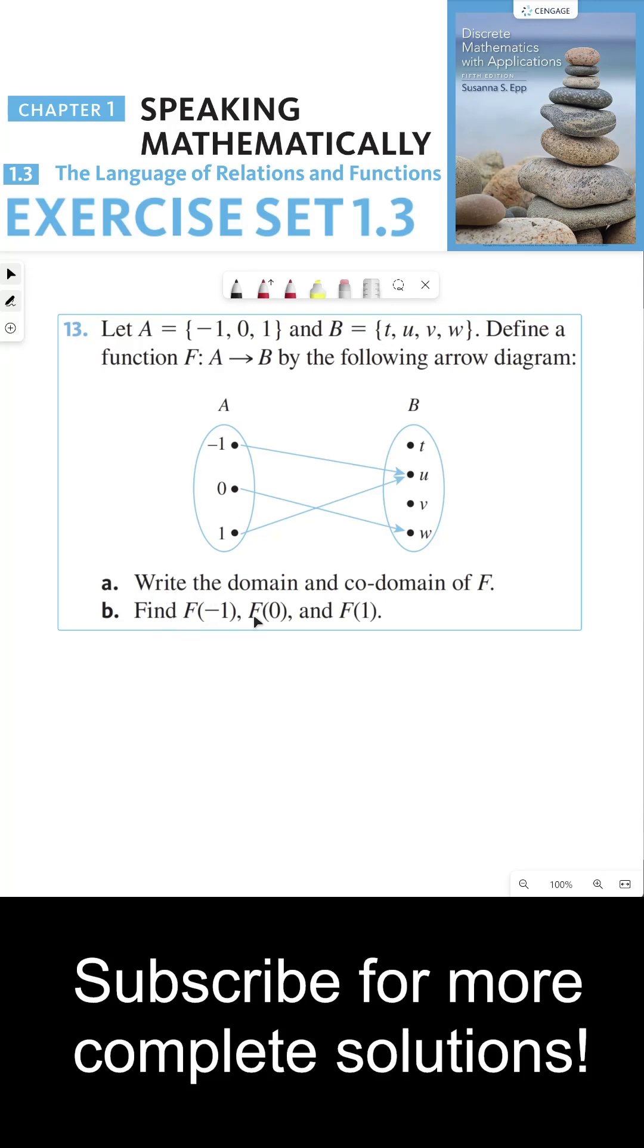For part B, find F of negative one. Well, F of negative one, according to this arrow diagram, is U, and we write that like this. F of zero is W, and F of one is also U. Anyways, thanks everyone, and I'll see you all in the next video.